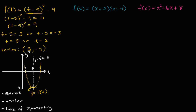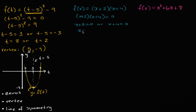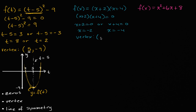Let's do the next function. For the zeros, we set (x + 2)(x + 4) = 0. That happens when x + 2 = 0, giving x = -2, or when x + 4 = 0, giving x = -4. The x-coordinate of the vertex is halfway between: (-2 + -4) / 2 = -6/2 = -3. When x = -3, f(x) = (-3 + 2)(-3 + 4) = (-1)(1) = -1. So the vertex is (-3, -1), and the line of symmetry is x = -3.